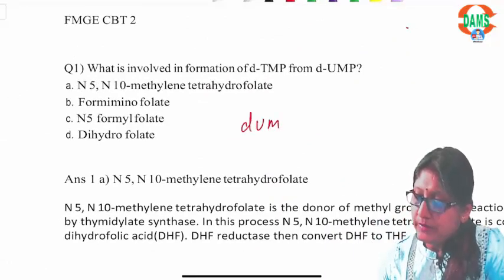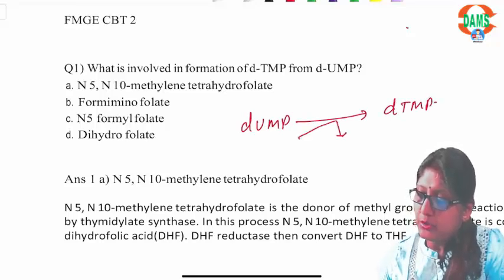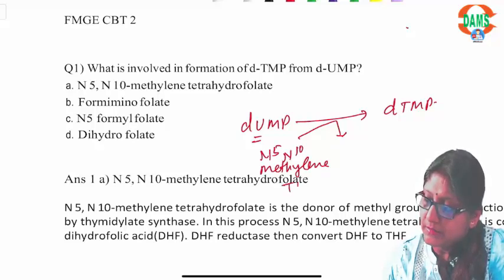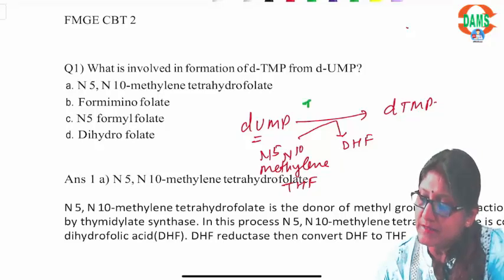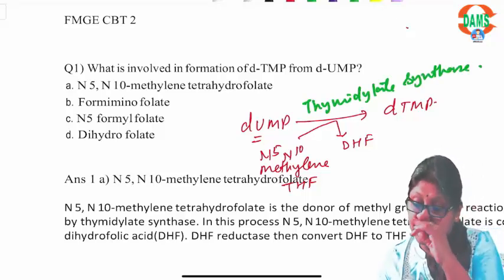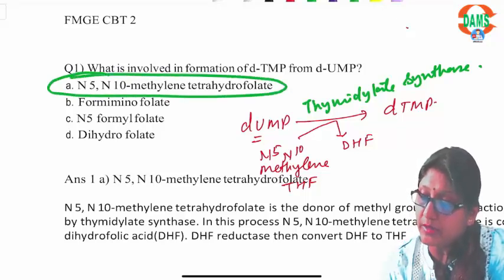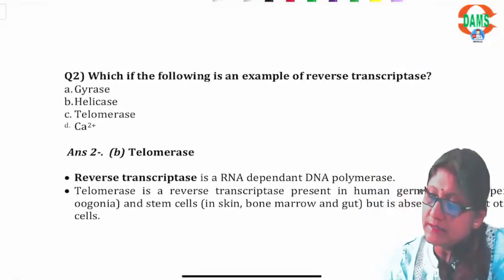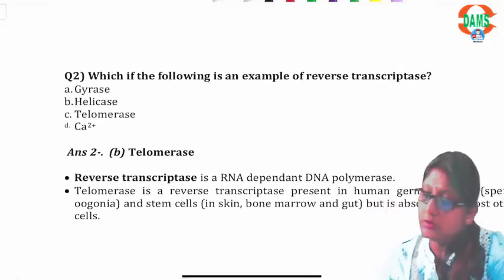Whenever we talk about the formation of deoxy-TMP, we need methylation of the uracil moiety. That methyl group is donated by N5,N10-methylene tetrahydrofolate acid, which is converted to dihydrofolate acid. The enzyme responsible is thymidylate synthase. So the donor of the methyl group in this reaction is N5,N10-methylene tetrahydrofolate acid.